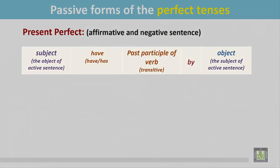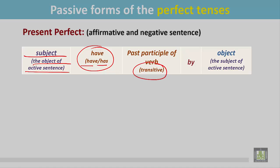See this structure. The sentence begins with the subject, which is the object of the active sentence. Then the verb 'to have' — according to the number and person of the subject, either 'have' or 'has' — followed by the past participle form of the transitive verb, the preposition 'by', and the object, which is the subject of the active sentence.